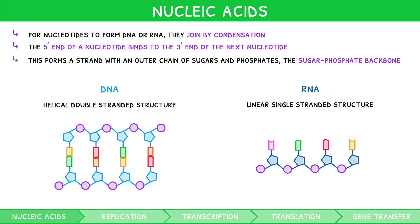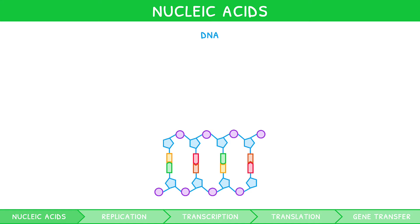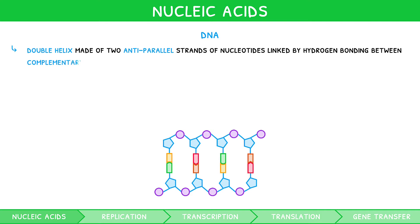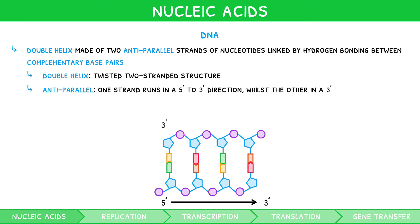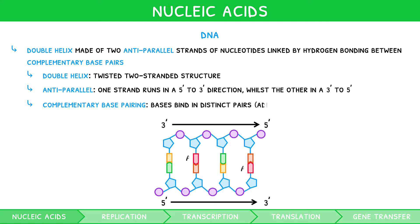The IB syllabus expects you to know the structure of DNA in detail. DNA is a double helix made of two antiparallel strands of nucleotides linked by hydrogen bonding between complementary base pairs. Double-helix relates to the twisted, two-stranded structure formed. Antiparallel relates to the fact that one strand runs in a five-prime to three-prime direction, whilst the other runs in a three-prime to five-prime direction. Complementary base pairing describes the fact that the nitrogenous bases always bind in distinct pairs. Adenine will always bind to thymine with two hydrogen bonds, and guanine will always bind to cytosine with three hydrogen bonds.